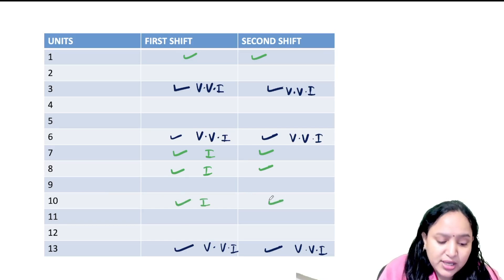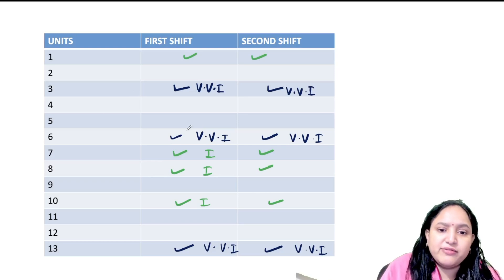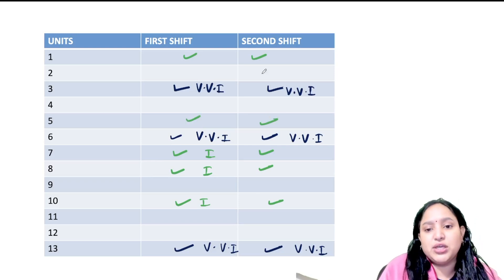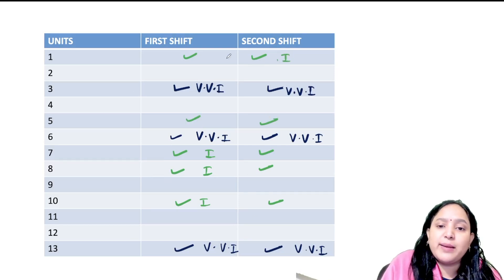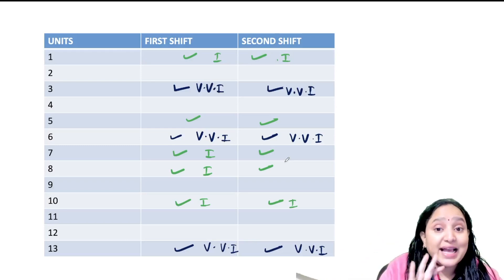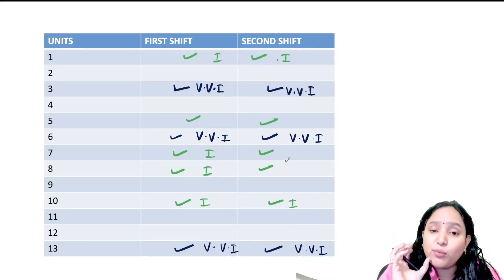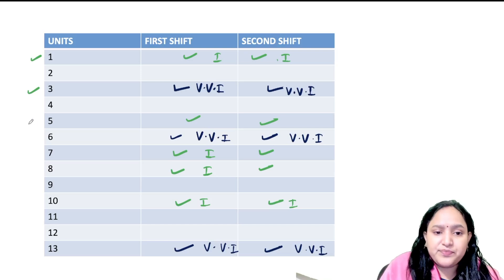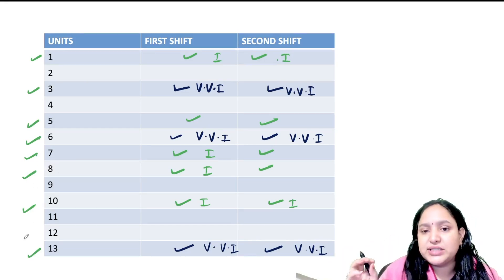Unit number 10, and then there is unit number 5, that is developmental biology. So these 5 units are important because compared to these 3 units, it is not just about numbers, but it is important. Units number 1, 3, 5, 6, 7, 8, 10, and 13 - these 8 units are the most important units. Now 5 units...